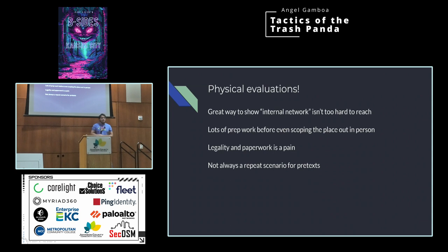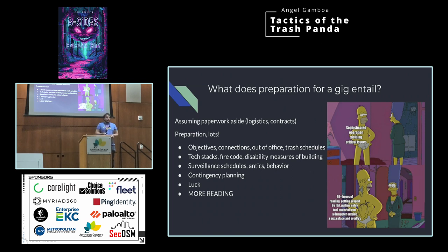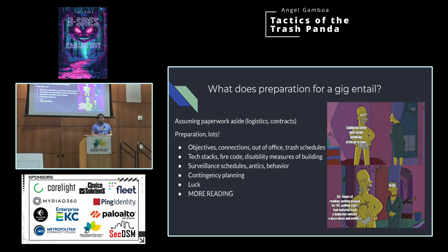Let's talk about physical evaluations. It's a great way to show an internal network isn't too hard to reach. There's lots of prep work — even without all the legal paperwork. If you're part of a large consultancy, they may handle a bunch of that, but there's still paperwork to do. There's not always repeat scenarios you can reuse for your pretext when social engineering people. What does preparation for a gig entail? You have to set up your objective connections, your out-of-office, your checks, trash schedules, get that information, look at their tech stacks, their surveillance schedules, company culture, and look at their contingency planning. You've got to have luck, and then read a lot. Most of the time it's not just breaking into a place — it's opportunistically doing your research, and then once you find an opening, going in.